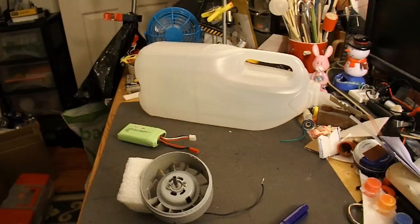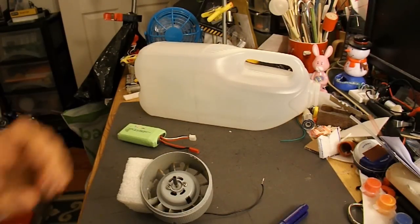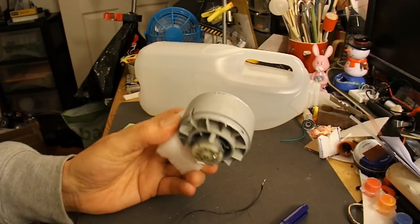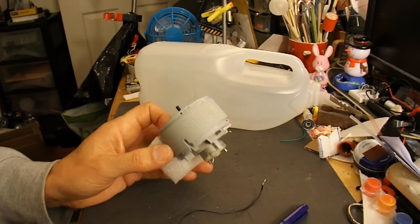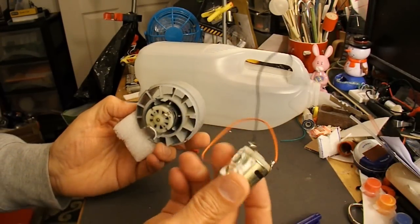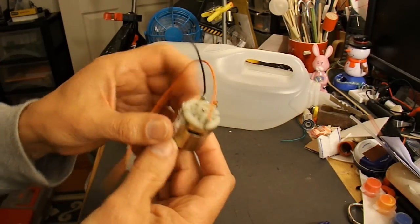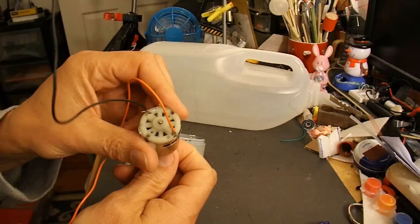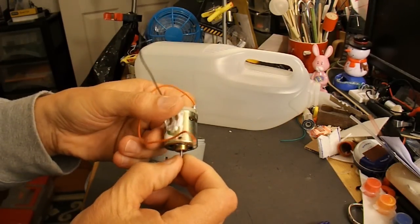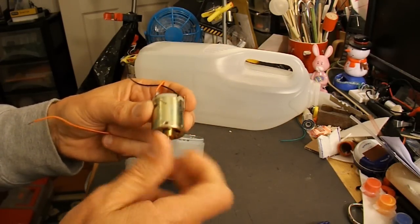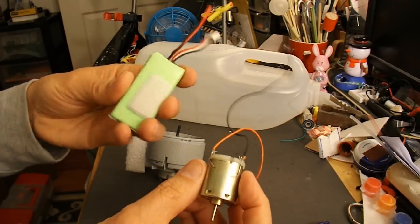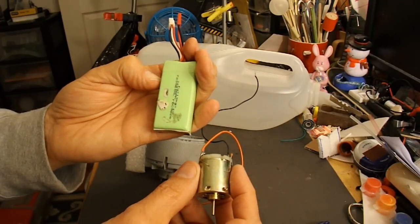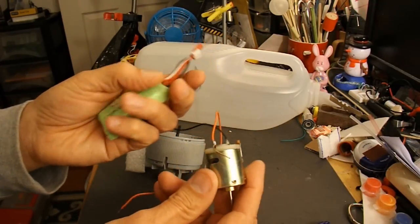So instead of the toothbrush motors that I normally use, I'm going to use one of the ones out of the hair dryers that I've got. These are ones I've used before. I'm not quite sure what the voltage rating is on them. I think it's probably 9V or 12V, something like that. But I think they ought to be able to handle a 2-cell LiPo battery. So that's what I'm going to do.